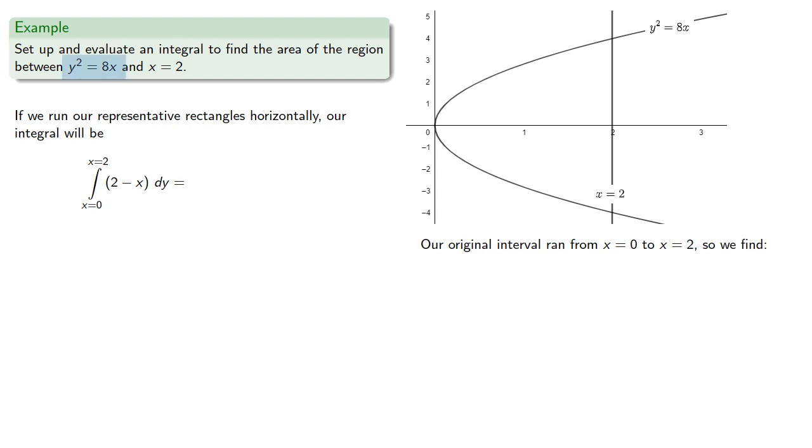So we have y² equals 8x, and so we find solving for y gives us... And notice that we have three solutions. And because we graph the region, we see our limit should be y equals -4 to y equals 4.